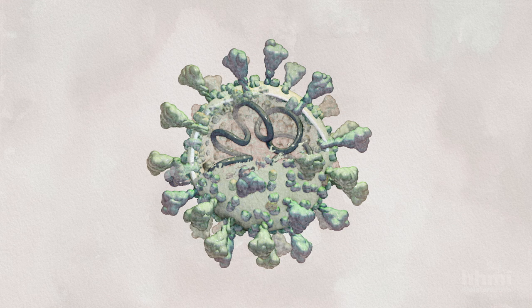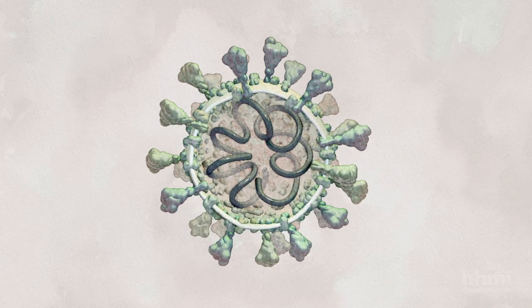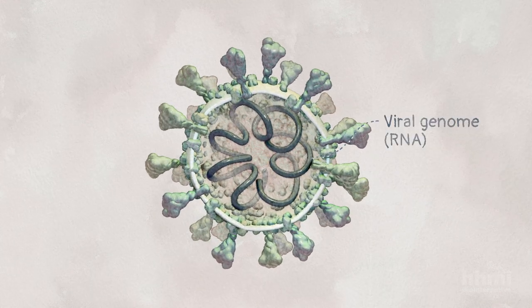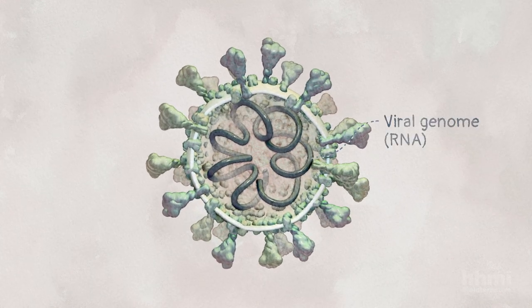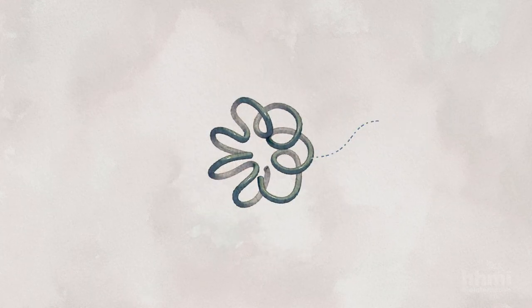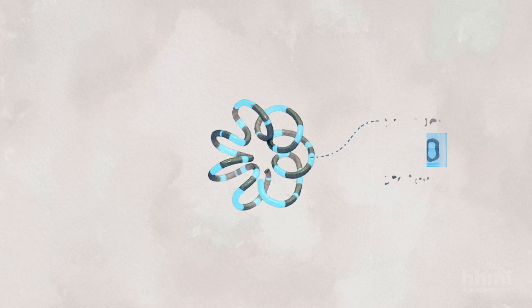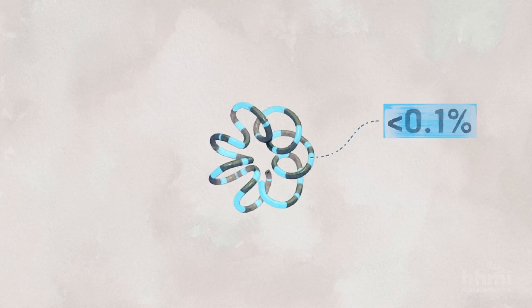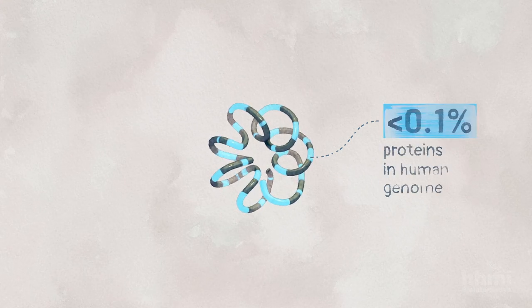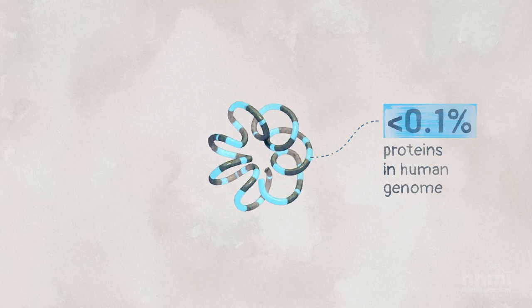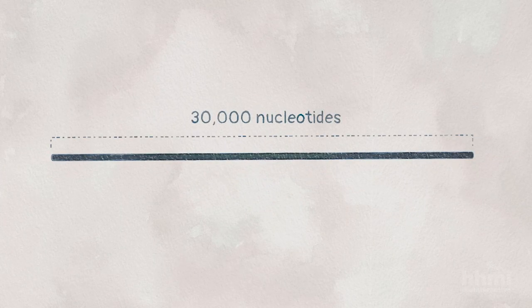The SARS-CoV-2 genome is a single strand of RNA with genes that encode fewer than 30 proteins. This is less than 0.1% of the proteins encoded by the human genome. The virus's genome is made of about 30,000 building blocks called nucleotides.